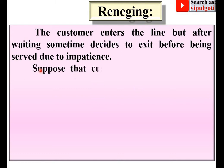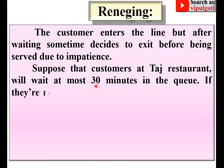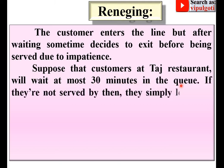Let's take one example. Suppose that customers at Taj restaurant will wait at most 30 minutes in the queue. If they are not served by then, they simply leave the shop. That means the capacity to wait in the queue is up to 30 minutes only — after that they leave, and that is called reneging.